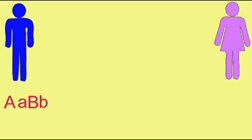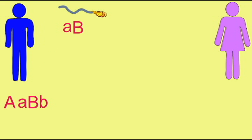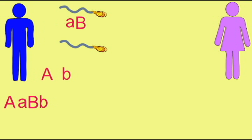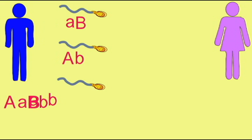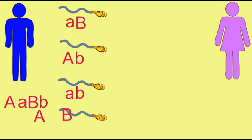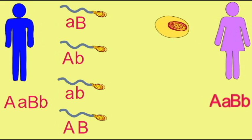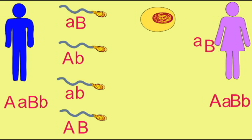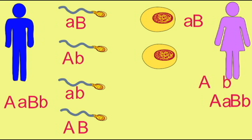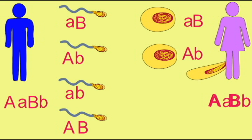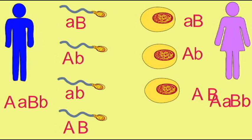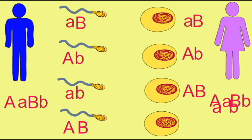If an individual is heterozygous for the two separate genes being considered, then meiosis will allow for four separate kinds of gametes. One quarter will have the dominant alleles for each of these two genes. One quarter will have the dominant allele for the first gene and the recessive allele for the second gene. A quarter will have the recessive allele for the first gene and the dominant allele for the second gene. And one quarter of the gametes produced will have the recessive alleles for both genes. So four types of gametes can be produced in individuals who are heterozygous for two separate genes.